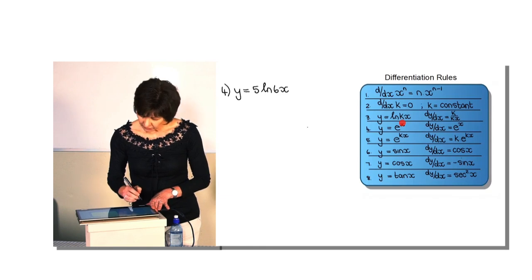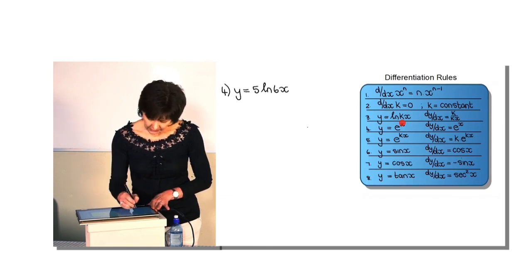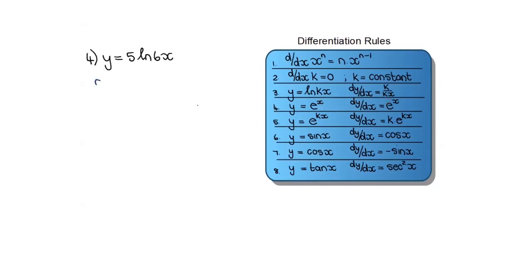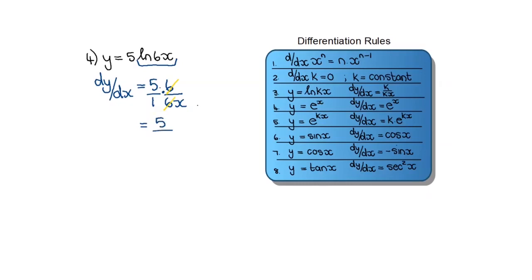Number 4 says I have to differentiate using rule number 3 on the list: the derivative of ln(kx) is k over kx. If I differentiate this, I still have the 5 as a constant. Then for ln(6x), the rule says the answer is k over kx, so in this case k is 6 over 6x. The 5 is over 1 and the 6 cancels with the 6. Therefore my final answer is 5 over x.